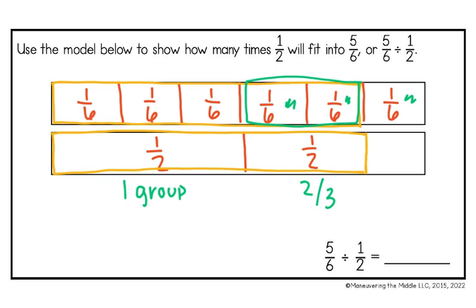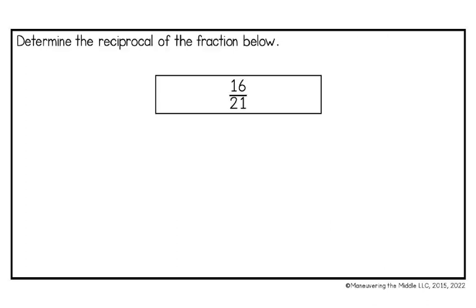So 5 sixths divided by 1 half is the same as 1 and 2 thirds. Now we are going to practice finding the reciprocal of fractions. If I have 16 twenty-firsts and I need to find the reciprocal, that simply means I need to flip my fraction upside down. So 16 twenty-firsts would become 21 sixteenths.